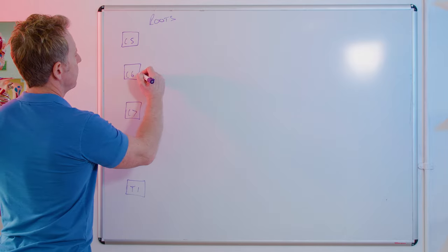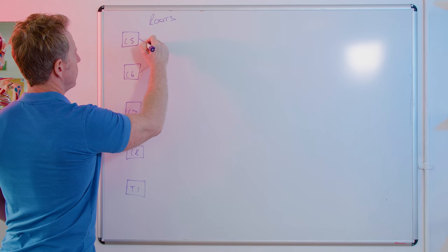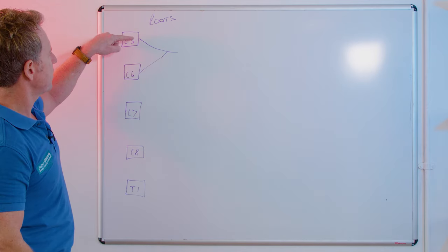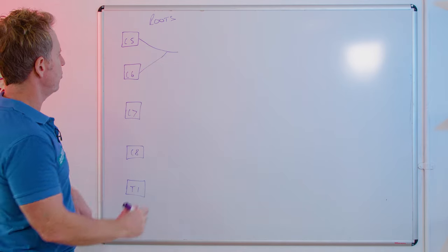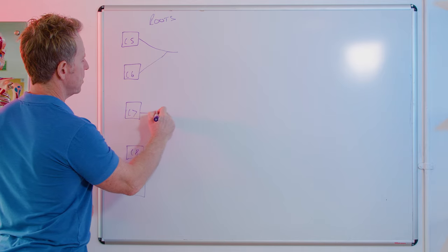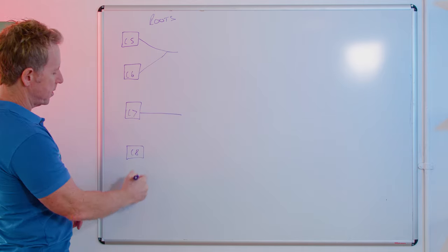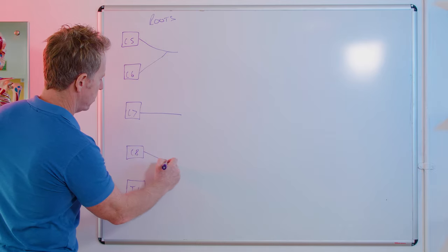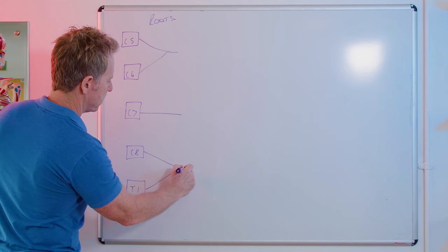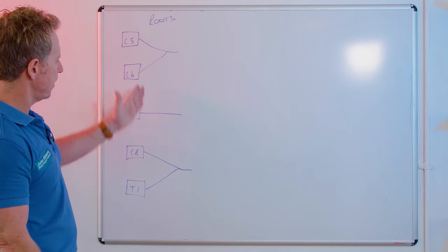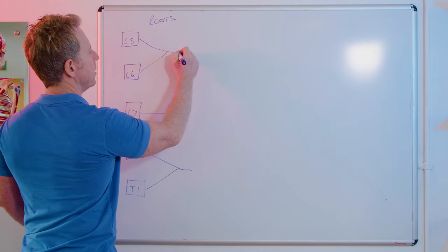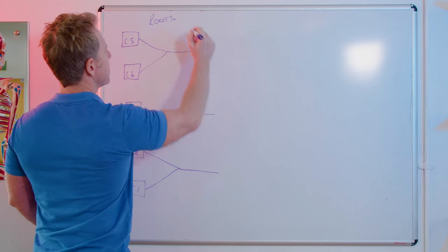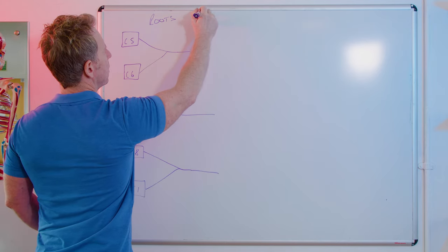C5 and C6 form together, so you've got the C5 and C6 nerve root joining. C7 continues as one, and then C8 and T1 do exactly the same as C5 and C6 — those two come down together. So basically five roots now become three.